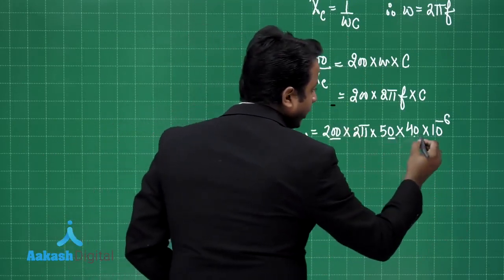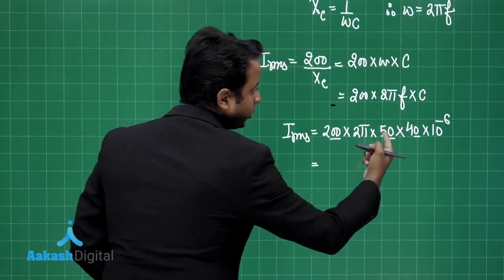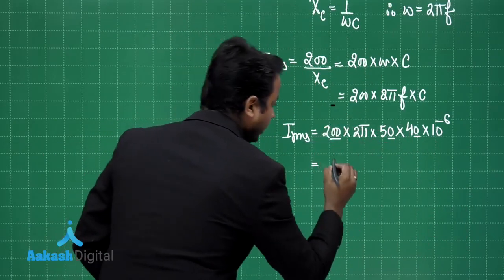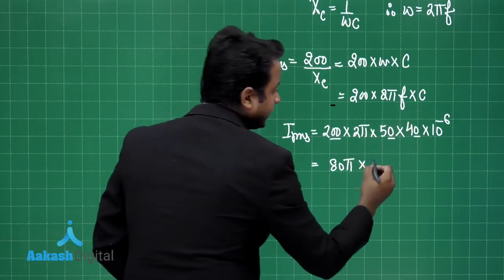These two zeros, 10, 10. If I solve it, this will be 5 into 4, 20, 20 into 2 is 40, 40 into 2 is 80. So, 80 pi into 4 zeros I have cancelled. So, 10 raise to the power minus 2.